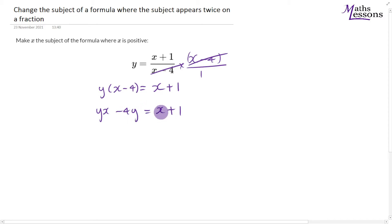First, I'll take x from here and take x from here. So I'll get yx minus 4y minus x. Taking off x from here, I'm just left with 1.